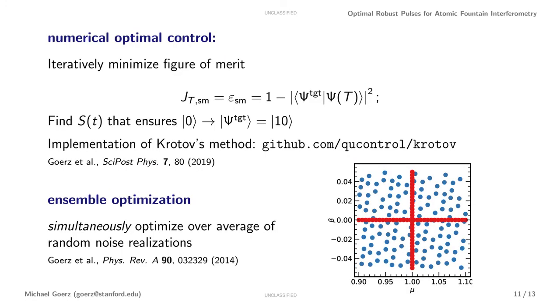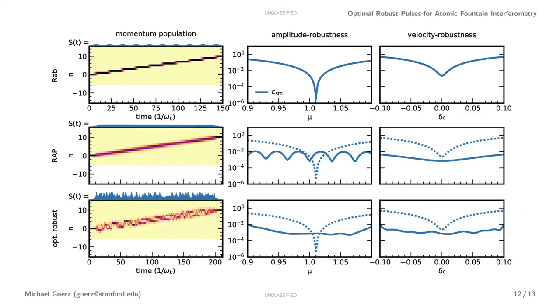Now what if we take an ensemble of variations of both pulse intensity and atom velocity? That's all the blue points here. Well, we find that we get very high robustness in the sense that the error is relatively flat. We don't get an order of magnitude improvement in the transfer fidelity anymore though. We basically find that we can extend the error that we get for the analytical schemes for the ideal system to the entire ensemble.